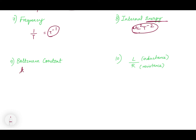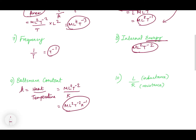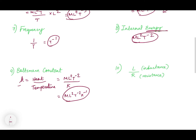Boltzmann constant is represented by the letter k. To find its dimension, you need to know the formula: heat by temperature. Heat is simply ML²T⁻², and temperature is represented by Kelvin (K). So it becomes ML²T⁻²K⁻¹. This is the dimension of Boltzmann constant. Just remember: Boltzmann constant k equals heat by temperature.